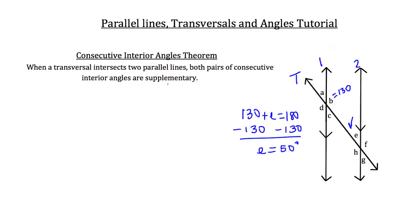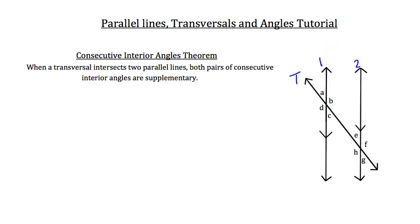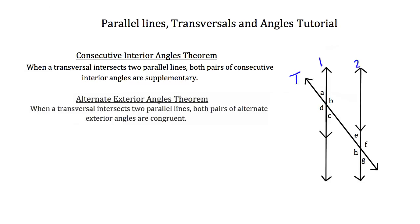That's a typical problem you might see with consecutive interior angles. The next theorem to discuss is the alternate exterior angles theorem. These occur when a transversal intersects two parallel lines, and both pairs of alternate exterior angles are congruent. We can look at angles D and F — because of the alternate exterior angles theorem, we know that angles D and F are congruent to each other.